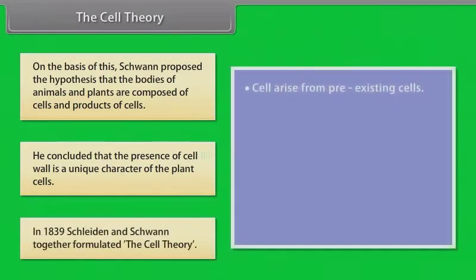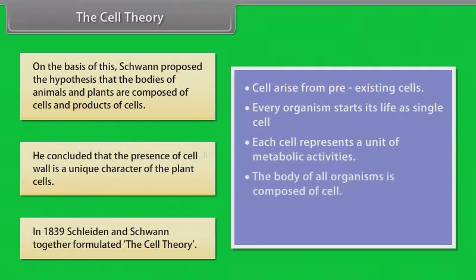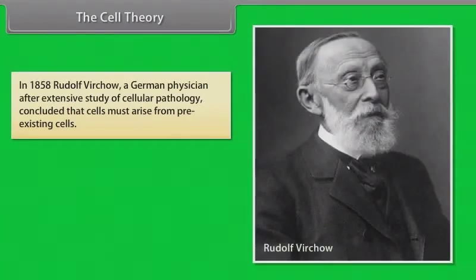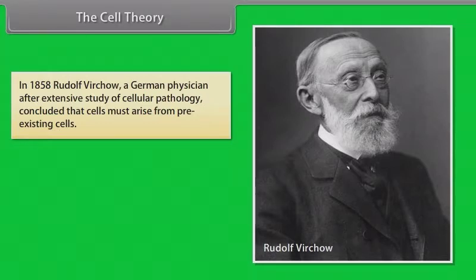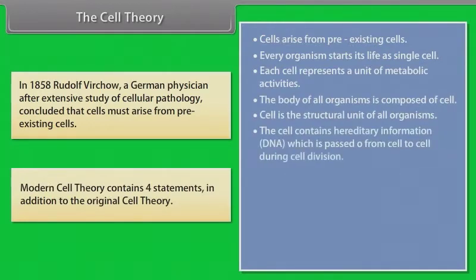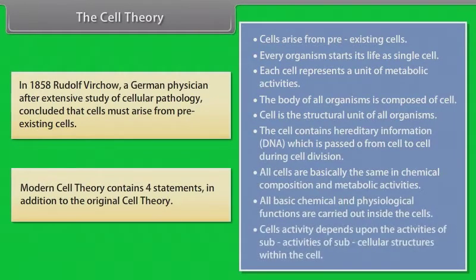In 1839, Schleiden and Schwann together formulated the cell theory. In 1858, Rudolf Virchow, a German physician, after extensive study of cellular pathology concluded that cells must arise from pre-existing cells. Modern cell theory contains four statements in addition to the original cell theory.